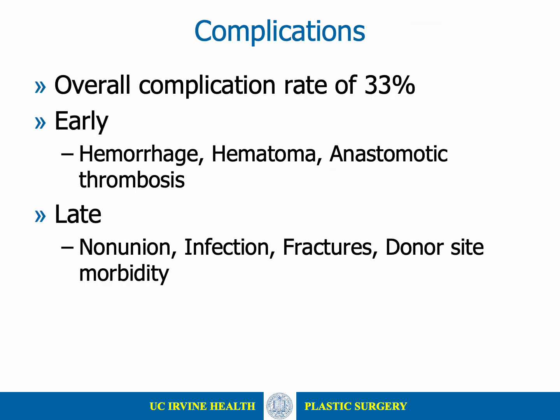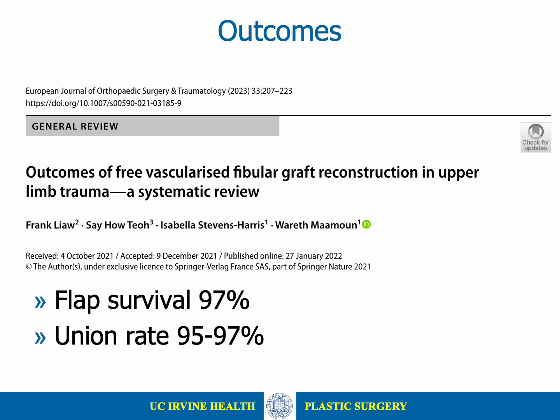Systematic reviews of fibula free flaps have noted an overall complication rate of 33%, most of which are minor. Early complications include hemorrhage, hematoma, and thrombosis, which can all lead to flap loss. Late complications include non-union, infection, fractures of the graft, and donor site morbidity including pain, scarring, and loss of foot function. In a systematic review of outcomes of free fibula flaps in the upper extremity, a flap survival rate of 97% and a union rate of 95% to 97% was reported.